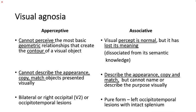In associative agnosia, the visual percept is normal but it has lost its meaning — it is dissociated from semantic knowledge. The person can describe the appearance, copy the object, and match it to a similar object, but will not be able to name it or tell its use. For example, a physician with associative agnosia shown a stethoscope would say 'it's a long pod with something round at the end' but cannot identify it as a stethoscope or explain its use. Pure associative object agnosia is usually seen with left occipitotemporal lesions.